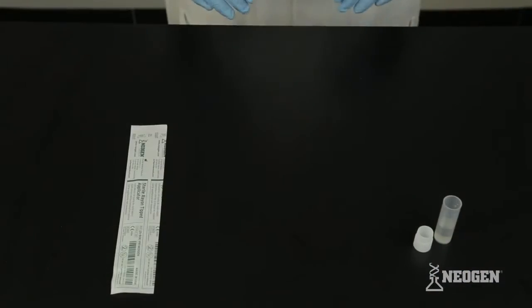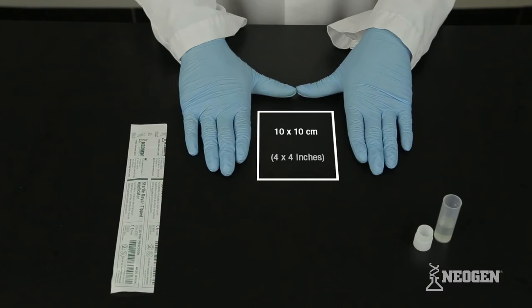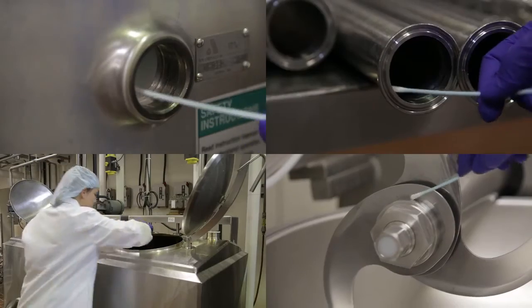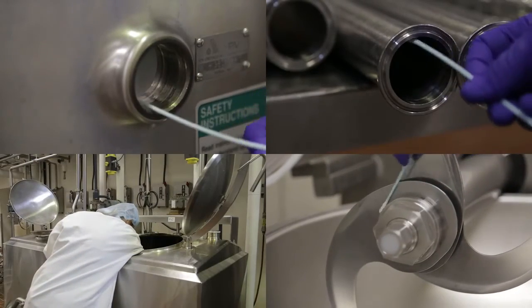If testing a flat surface, estimate a swabbing area of approximately 10 by 10 centimeters. Alternatively, use the swab to collect samples from problem areas like processing equipment, mixers, or filler heads.